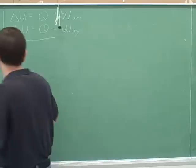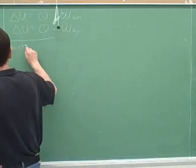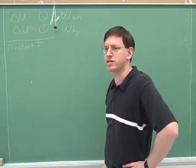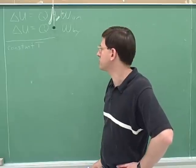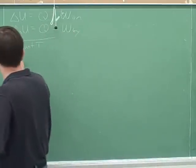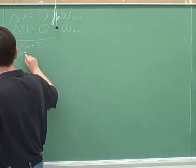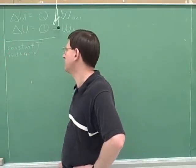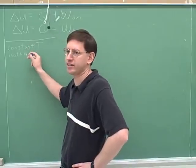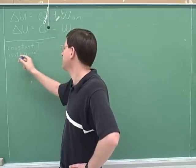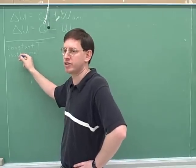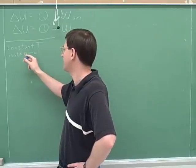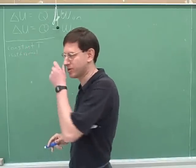Let's think in general about situations with constant temperature. We need a name for situations with constant temperature. A good name for a situation with constant temperature is isothermal. We just saw that cyclic processes have constant temperature, but that's a little unusual. There are many other cases with constant temperature that are not cyclic. 'Therm' means temperature, like a thermometer measures temperature — just like a barometer measures pressure. So isothermal means constant temperature.